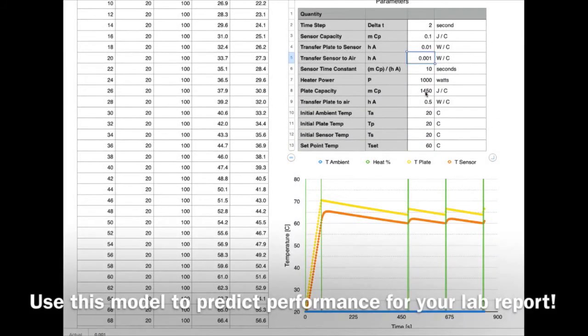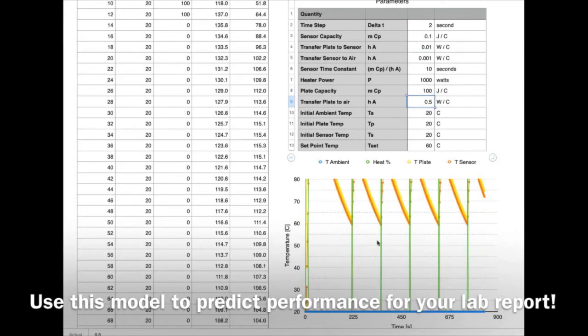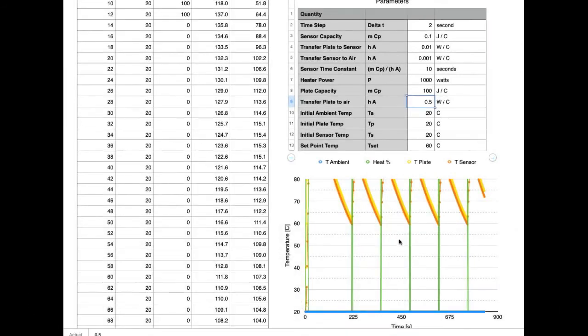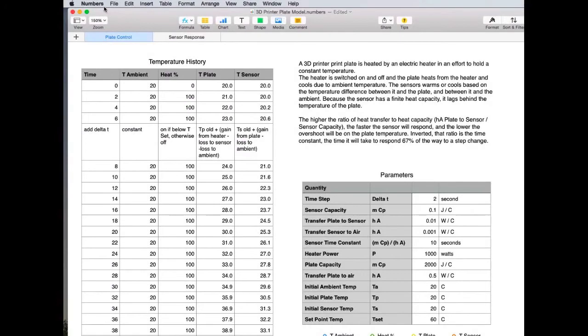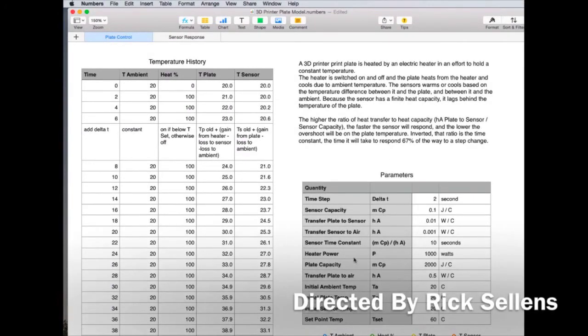You can load up this spreadsheet yourself and change some of the parameters to see what happens. When you're changing the parameters, you may need to change the scaling of the graphs in order to see the results. This is an Apple Numbers spreadsheet. I've got an Excel spreadsheet on D2L for you that has exactly the same calculations in it, but it's not as neatly formatted.